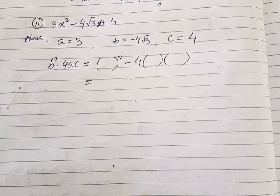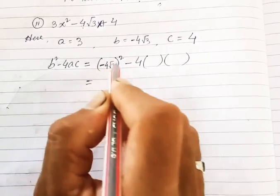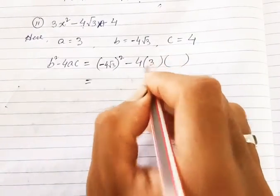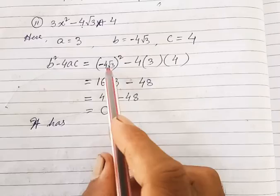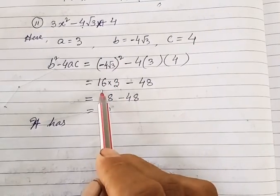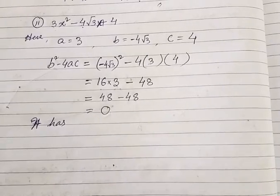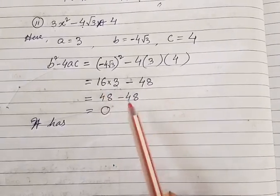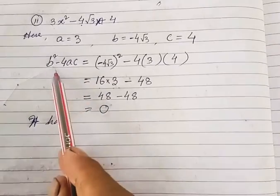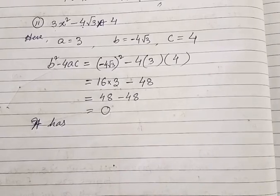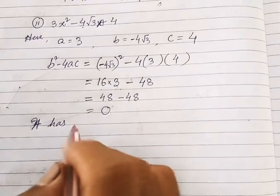b = -4√3 and c = 4. Now find b² - 4ac: (-4√3)² - 4 × 3 × 4 = 16 × 3 - 48 = 48 - 48 = 0. So b² - 4ac = 0. As already known, if b² - 4ac equals 0, then the equation has two equal roots. This is the nature of the roots.